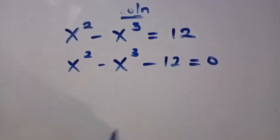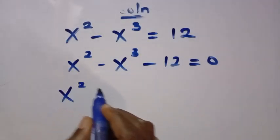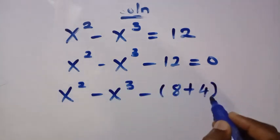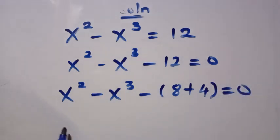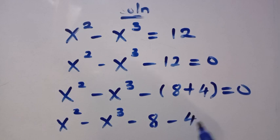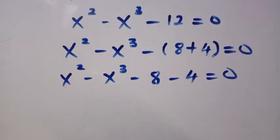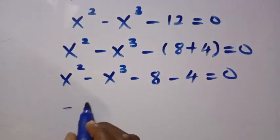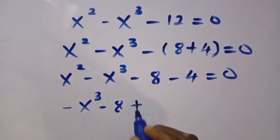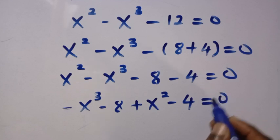By breaking down 12, we have x squared minus x cubed minus 12, where 12 is 8 plus 4, equals 0. Opening with negative, we have x squared minus x cubed minus 8 minus 4 equals 0. Combining these together, starting with minus x cubed minus 8, and also plus x squared minus 4 equals 0.